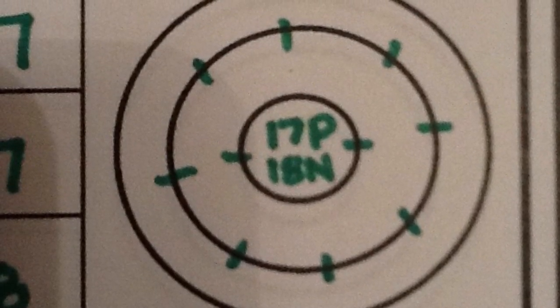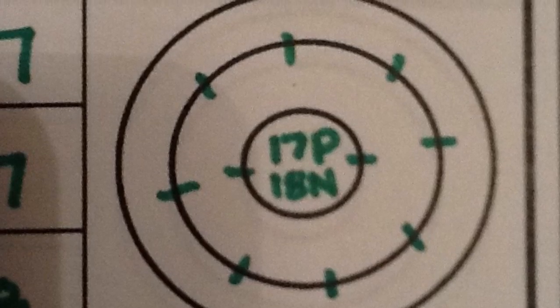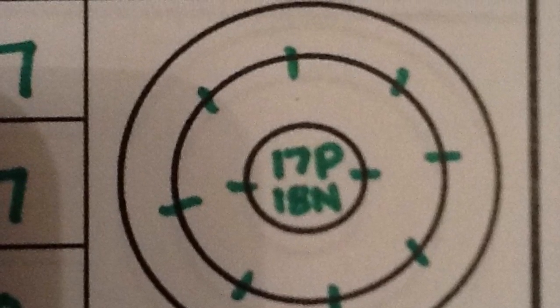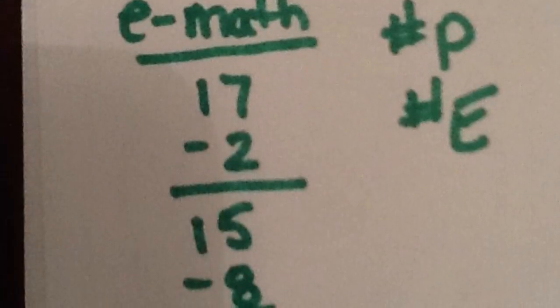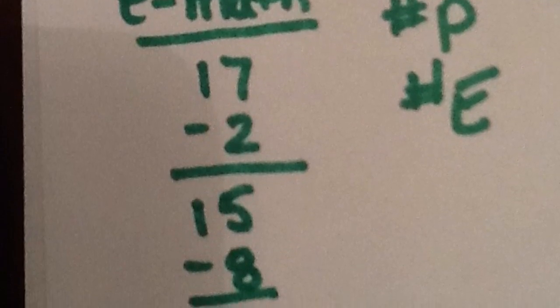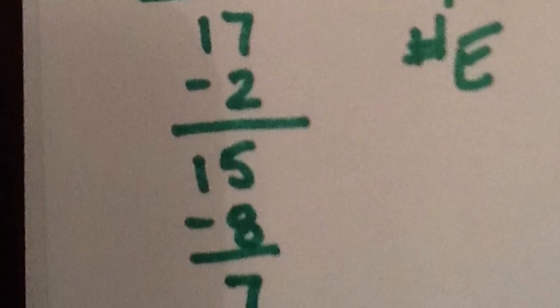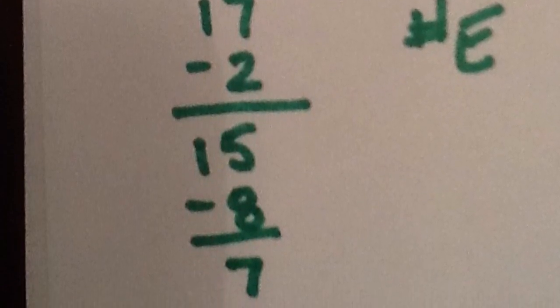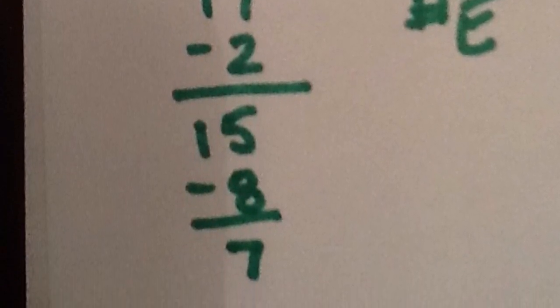The second energy level can hold 8 electrons. So go ahead and draw those in that second level around the nucleus. Now back to your electron math. You had 15 left, subtract 8 from that total, and now you have 7 electrons left to place in an energy level.